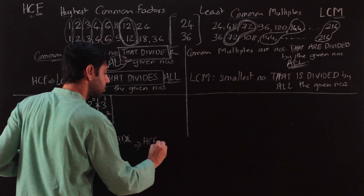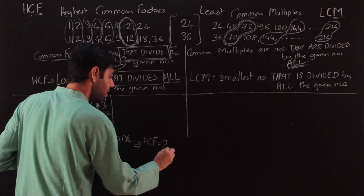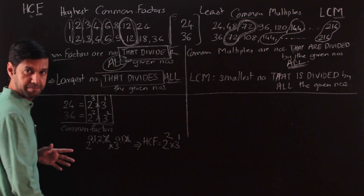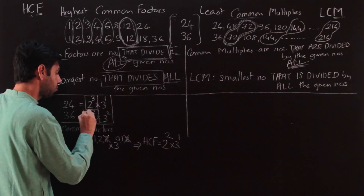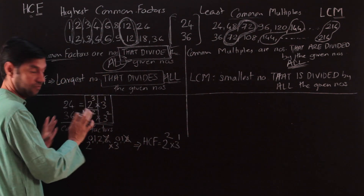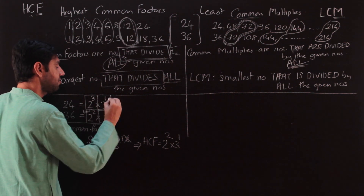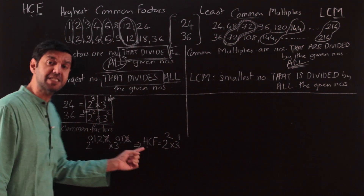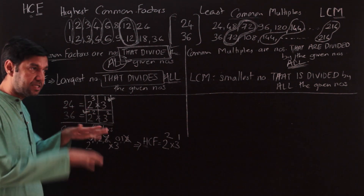Amongst these I require the HCF — the highest common factor. So I want the largest value, which means taking the largest allowable powers: 2² and 3¹. Notice: between 2³ and 2², I chose 2². Between 3¹ and 3², I chose 3¹ — the lesser of the two. The first priority is that it must be a common factor, meaning it must divide both numbers.